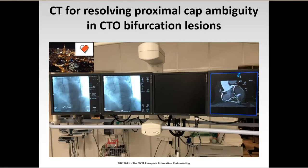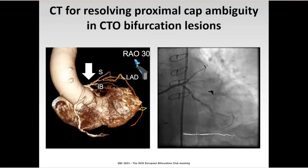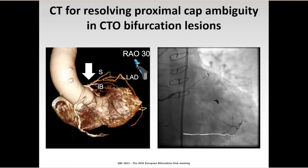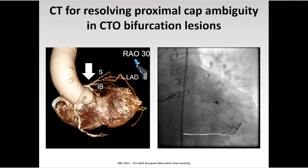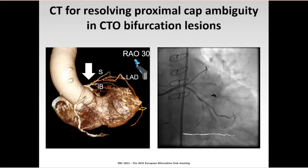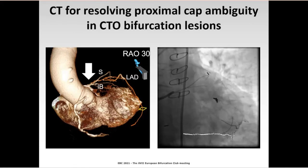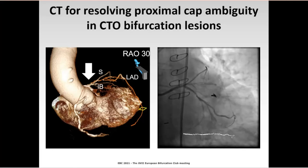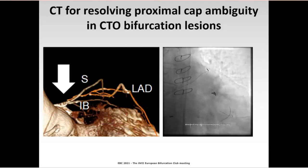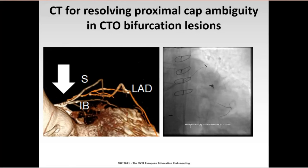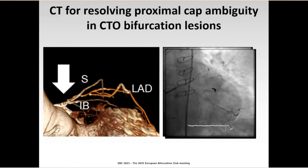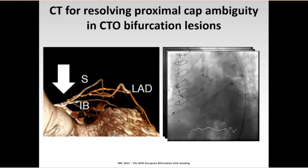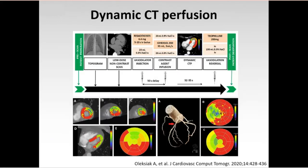Last but not least, coronary CT can be brought directly to the cath lab to assist in resolving proximal cap ambiguity in CTO intervention. Here you can see a complex CT-CTO LAD flush occlusion in a post-CABG patient that couldn't be resolved by coronary angio despite dual catheter injection. Remarkably, the guidewire kept going to the septal branch or subintimal space of the intermediate branch, which was easily detected with CT co-registration and ultimately directed into the right course of the LAD, resulting in a good final result.